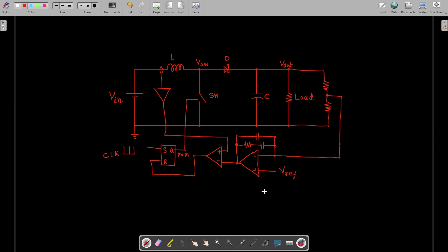Our boost converter will take 5 volt input and give 12 volt output. Maximum load current is 2 ampere, maximum ripple voltage is 120 millivolt, power efficiency we're targeting 80 percent, and switching frequency would be 120 kilohertz.